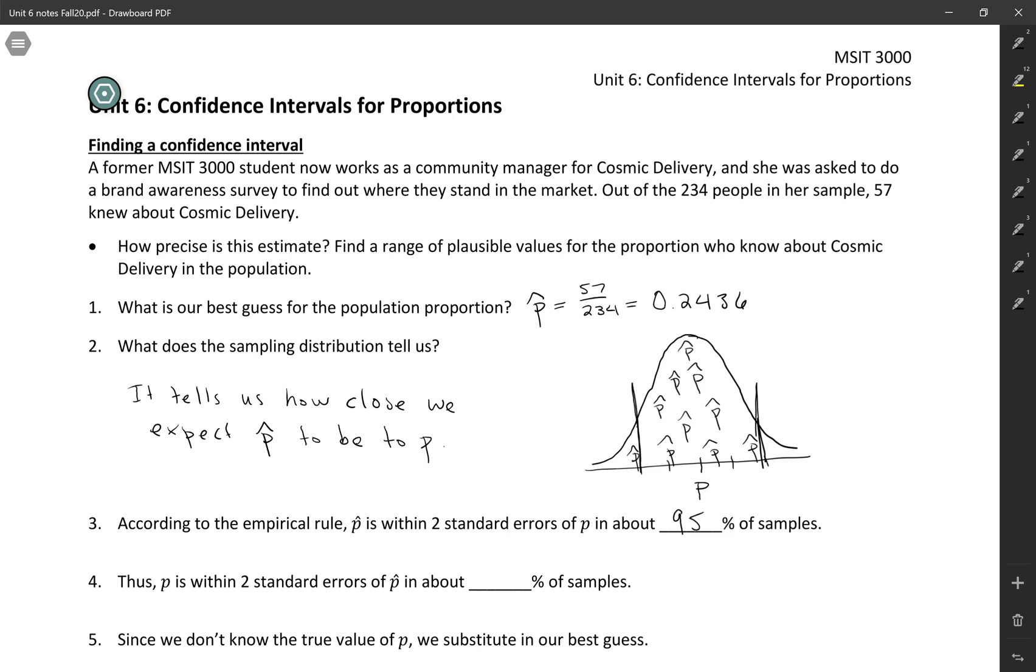So at first that doesn't seem very useful, right? We don't know what our true parameter is, so how are we going to set up our sampling distribution?